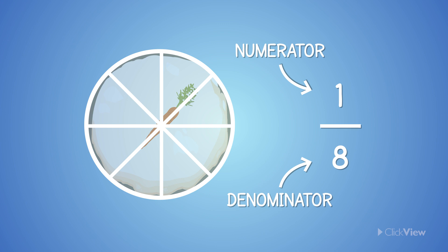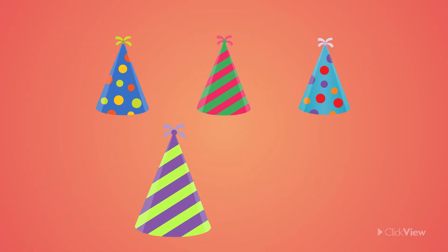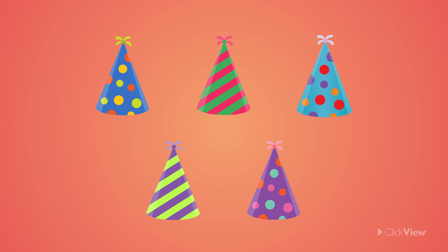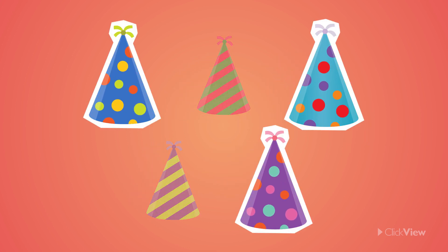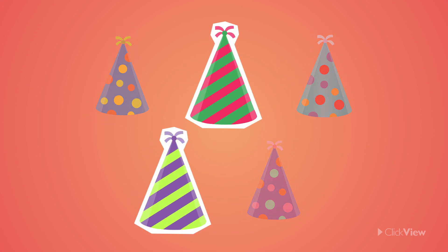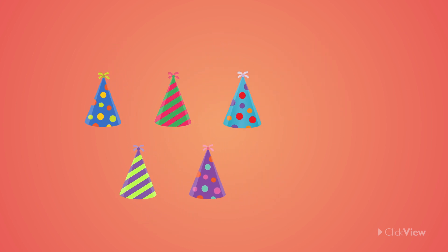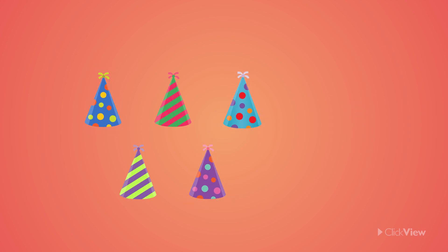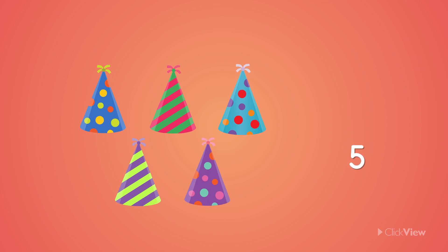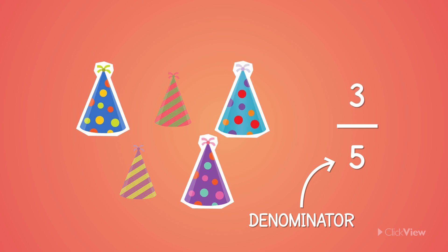Let's look at fractions in a slightly different way. Here are some of the party hats for Lily's birthday party. There are five in total. Some have spots on them and some have stripes. How many out of the five party hats have spots? Three. The total number of party hats we have is five, which is the denominator. Three of the party hats have spots, which is the numerator.